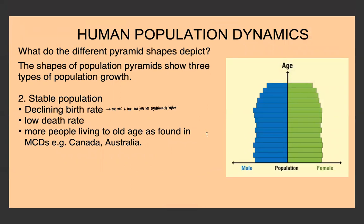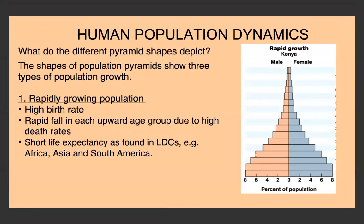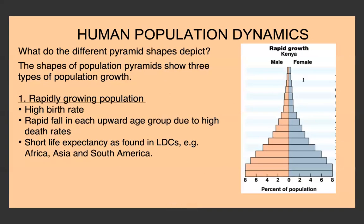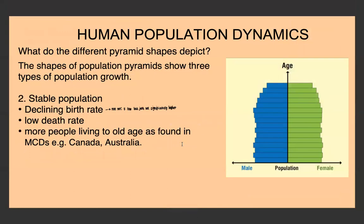The second type is a stable population, where there's a declining birth rate — not necessarily very low, but starting to get lower — and a very low death rate. There's very little change between age groups, more people living to old age, and the population isn't increasing rapidly. These would be MDCs like Canada, Australia, Switzerland, and Germany.